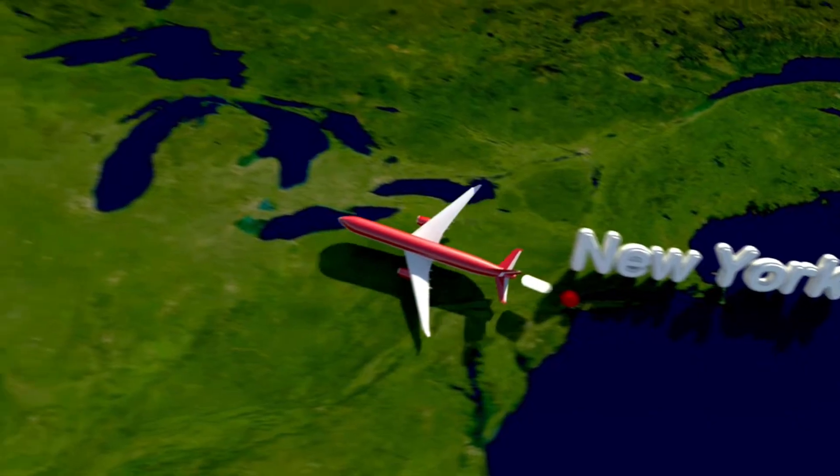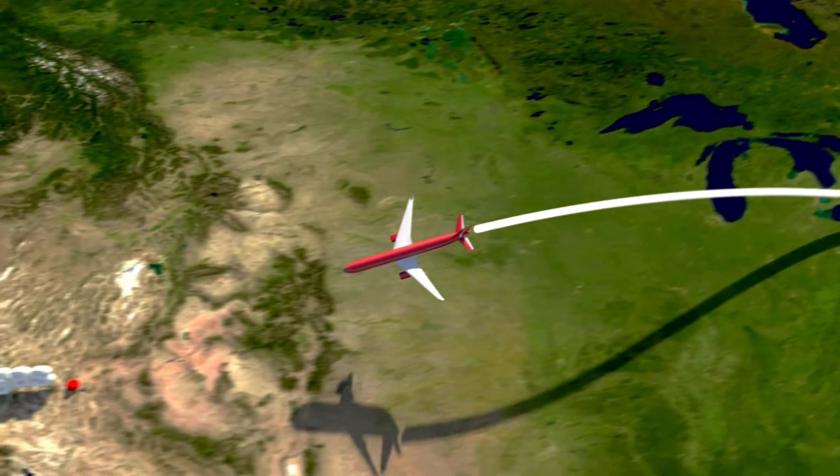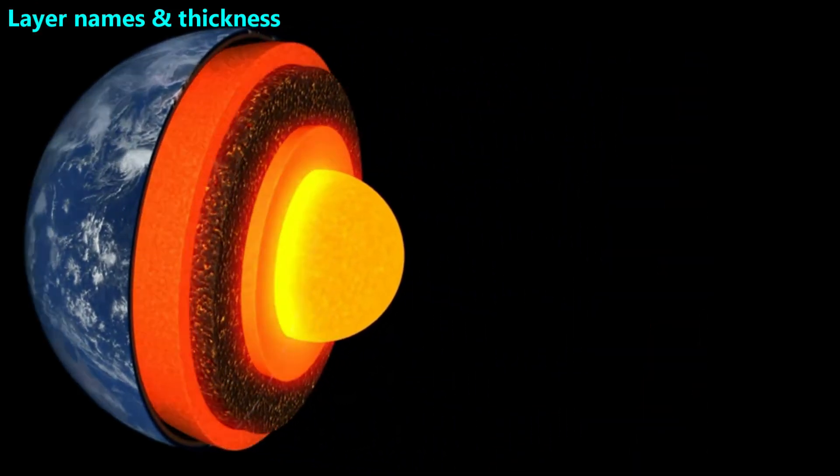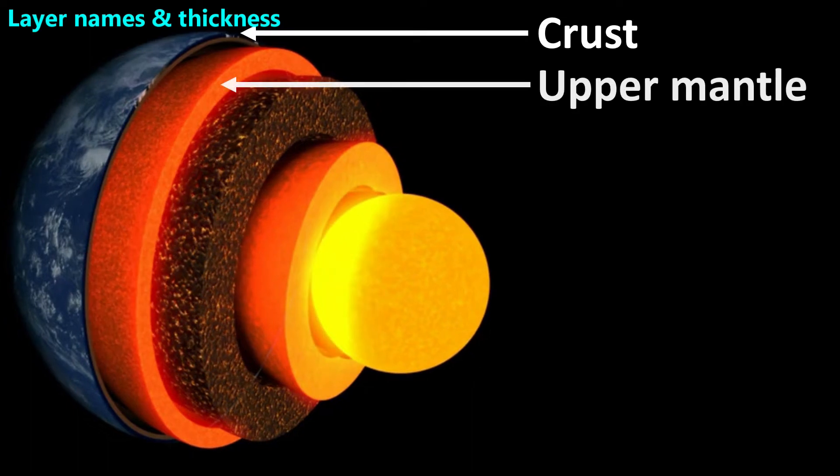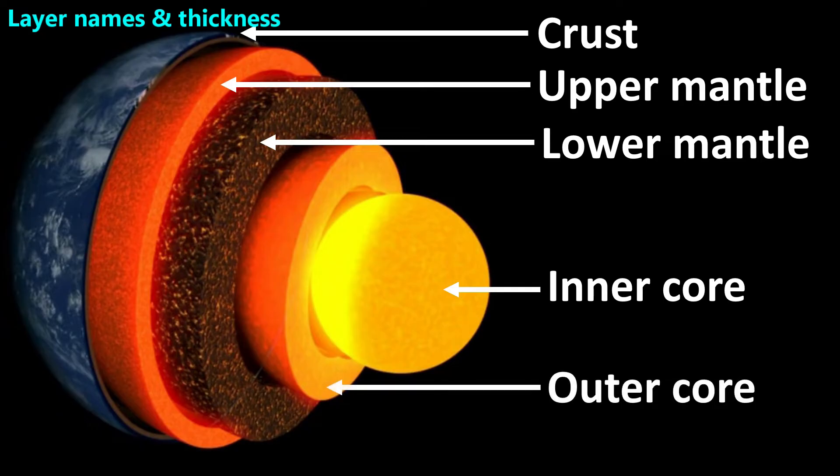So, to get to the center of the Earth would be about the same distance as going from Los Angeles to New York, and then back to Los Angeles. Geologists further divide the mantle and core into several more parts. The mantle is divided into the upper mantle and the lower mantle, and the core is divided into the inner core and the outer core. That means there are five basic layers inside the Earth.